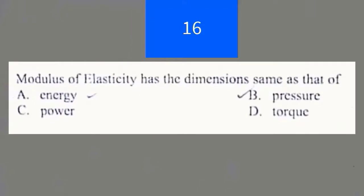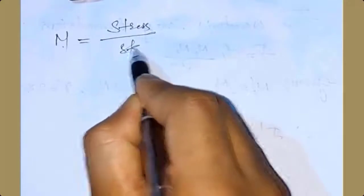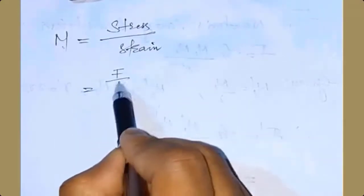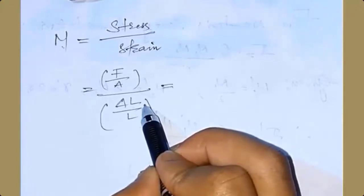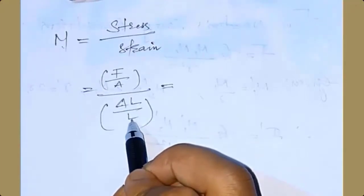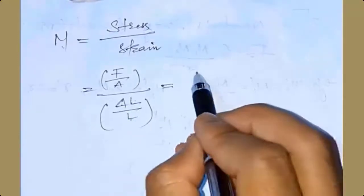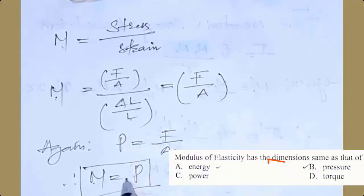We have to find the dimensions of the modulus of elasticity and compare them. The modulus of elasticity is defined as stress divided by strain. Stress is force per area, and strain is change in length divided by original length. Since both lengths have dimensions of L, they cancel. We are left with force per area only. The modulus of elasticity in terms of dimension is F/A. We know that pressure is force per unit area, so in terms of dimension, modulus of elasticity has the same dimension as pressure.